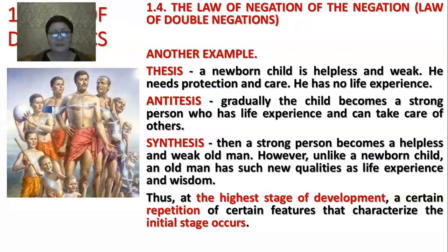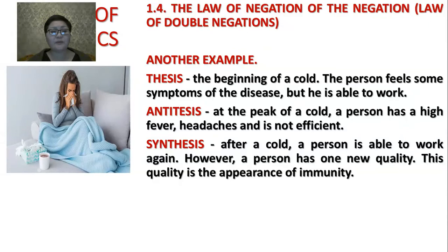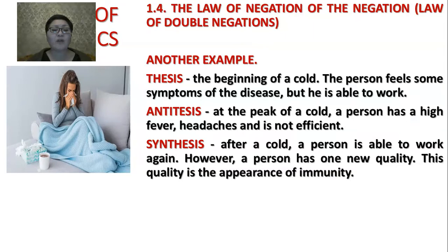One more example. Thesis: the beginning of a cold — the person feels some symptoms of the disease but is able to work. Antithesis: at the peak of a cold, a person has a high fever, headaches, and is not efficient. Synthesis: after a cold, a person is able to work again. However, the person has a new quality — the appearance of immunity. There are two types of denial: metaphysical negation and dialectical negation.